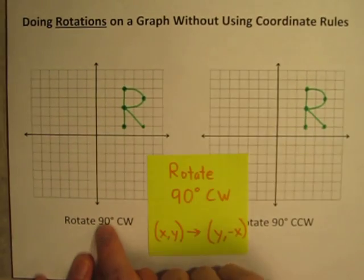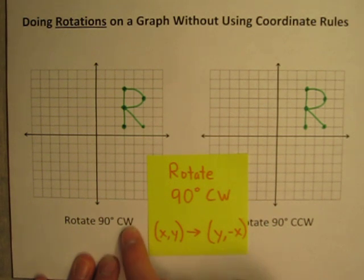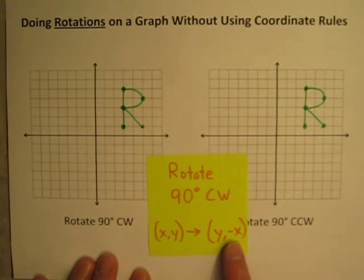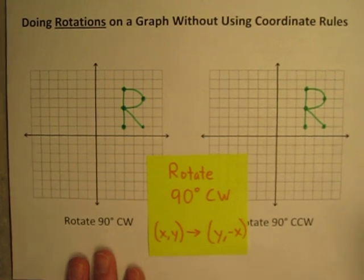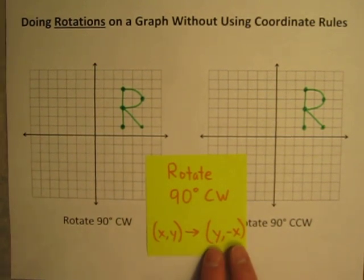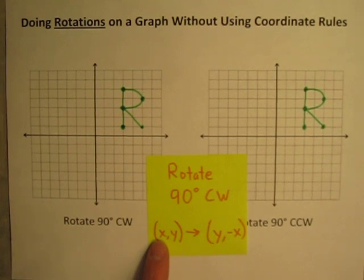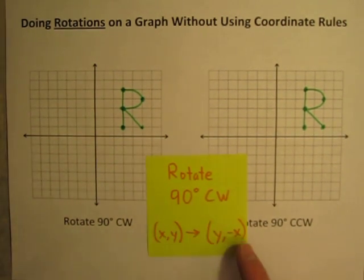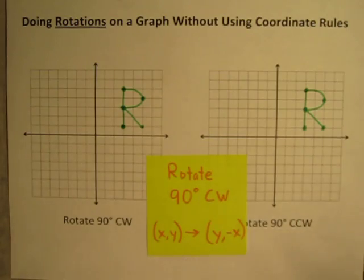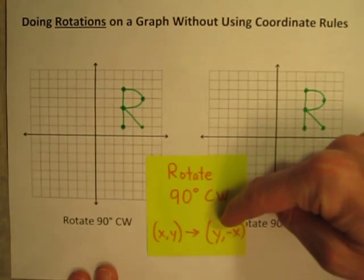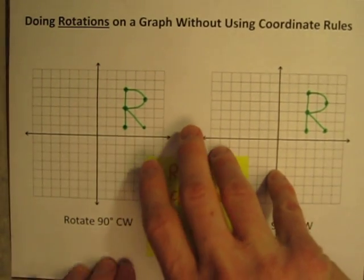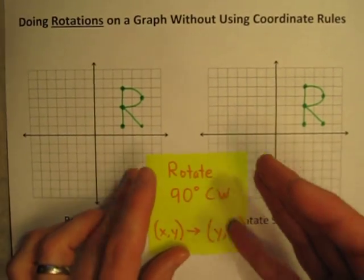For example, if I were going to rotate this letter R 90 degrees clockwise — CW is clockwise — I would have to write down the coordinates of all five of those points in the letter R. Then I'd have to apply this rule, remember the rule, or look up the rule: that any point (x, y) becomes the point (y, -x). So I take my original x coordinate, take the opposite of it, make it the new y coordinate, and take my original y coordinate and make that the new x coordinate. I'd have to apply this rule to all coordinates, make a list of the new coordinates, and plot them — and sometimes that can just be kind of a headache. So let's just do this without bothering with these coordinate rules.